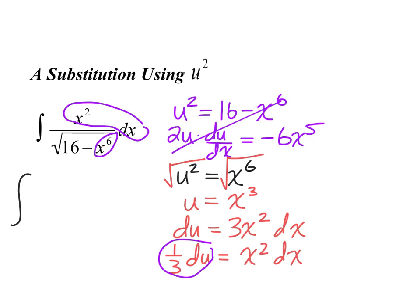We still have a little more work ahead before it's in the ideal form, but we're moving in the right direction. So I have one third du over 16 minus u squared. That's kind of an issue, because we're looking at something very close to the arc sine rule — but that 16 is messing everything up.